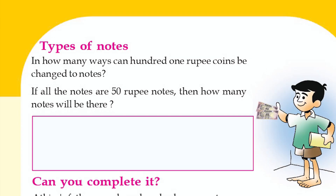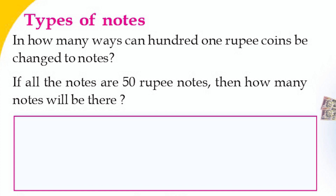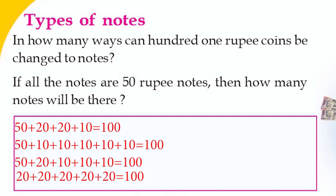Page number 8. Types of notes. In how many ways can 100 rupee coins be changed into notes? We need to make 100 rupees. For example: 10 tens; 50 plus 50; 50 plus 20 plus 10 plus 10 plus 10; 30 plus 20 plus 50 equals 100; 20 plus 20 plus 20 plus 20 plus 20 equals 100.